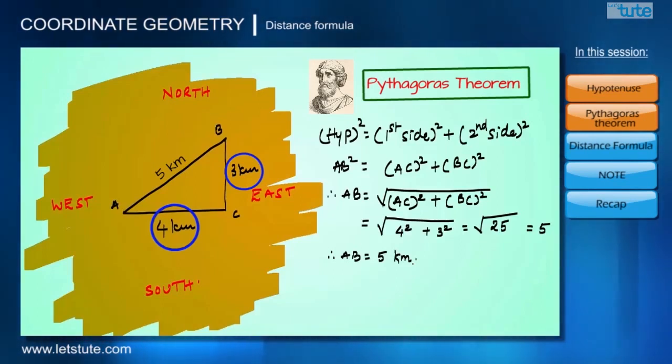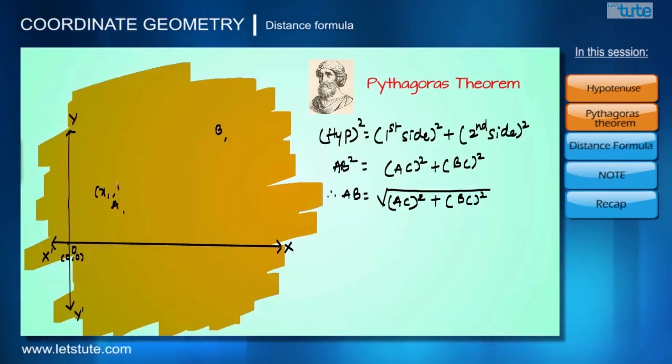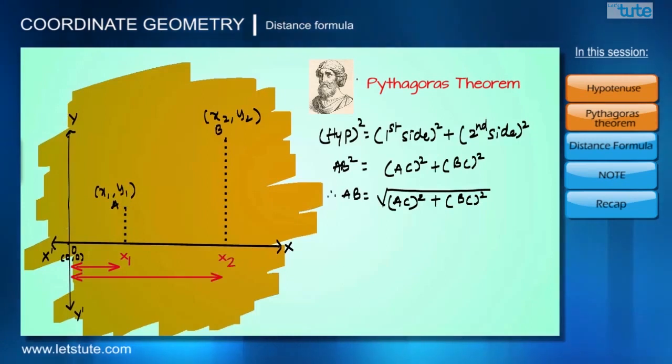What if instead of absolute distances we are given coordinates of those two towns? So let's say A is (x₁, y₁) and B is (x₂, y₂). Now A is x₁ units away from the origin and B is x₂ units away from the origin on the x-axis. We can find the length between x₁ and x₂ by subtracting this small length x₁ from this big length x₂, so therefore length between x₁ and x₂ becomes x₂ minus x₁.